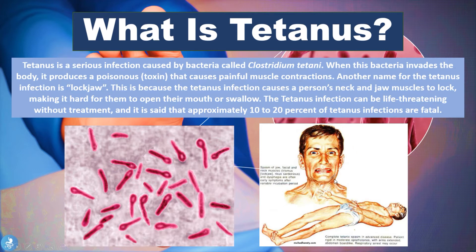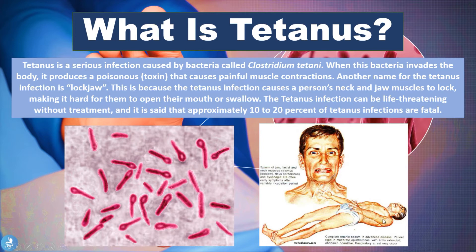The spasm of the jaw, facial, and neck muscles — pictured here — is given the name risus sardonicus. These patients will often suffer from dysphagia and may even have difficulties breathing because of all the tension within the various muscle groups in the neck region. Another key sign is opisthotonus, which describes a complete titanic spasm in advanced disease. The patient will be in rigid or moderate opisthotonus, with the arms extended and the abdomen board-like, and respiratory arrest may actually occur.